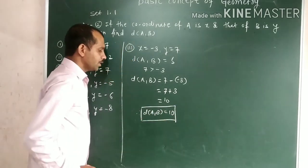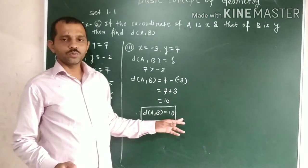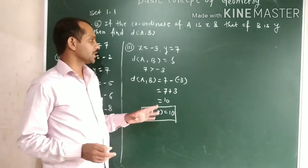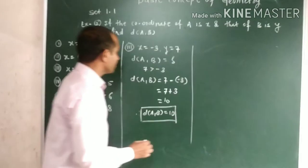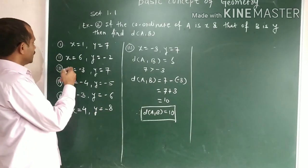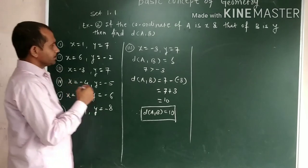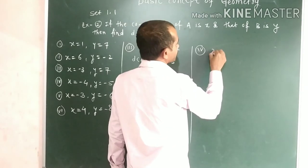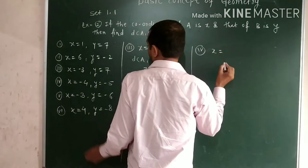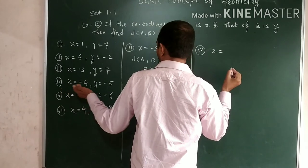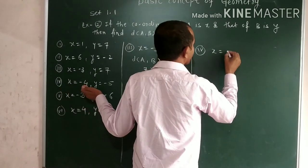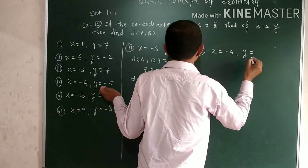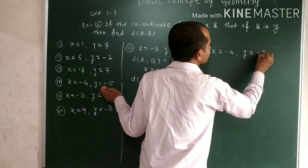The distance between points A and B is equal to 10. The next example is example number 4. In example number 4, x is equal to minus 4 and y is equal to minus 5.